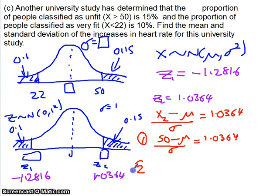Now we can get a second equation using our information over here. Our X1 value here, 22 minus μ over σ, is the number of standard deviations away that this is, which we know is minus 1.2816.